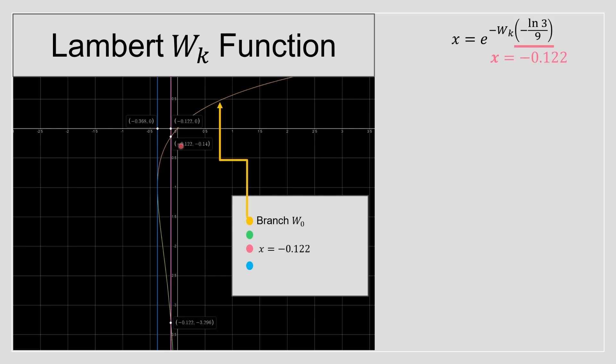And now, we know that this branch W₀ is this over here, and we know that branch negative 1 is this green one over here. Note that our function, this pink branch, intersects at two points over here, so we're going to have two solutions. And this blue straight line over here is the vertical asymptote of negative 1 divided by e, which is represented by negative 0.368.